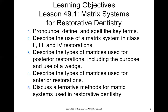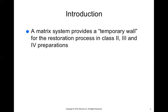Okay, hello everyone. I'm going to start our lecture on chapter 49. We started this last Tuesday but since not everyone was there, I'll start from the beginning. This chapter is about the different matrix systems we can use when a patient needs an interproximal restoration. When we say interproximal, we mean the side surfaces — the mesial or distal surface.